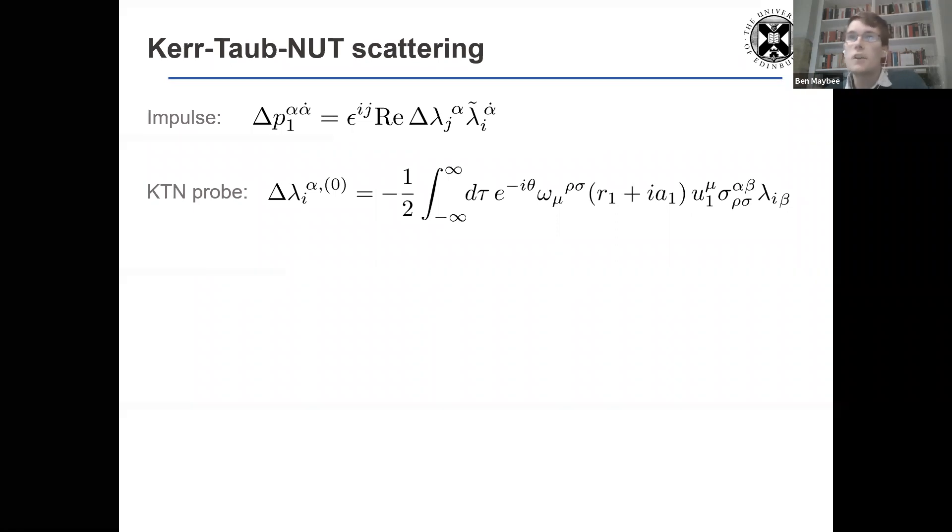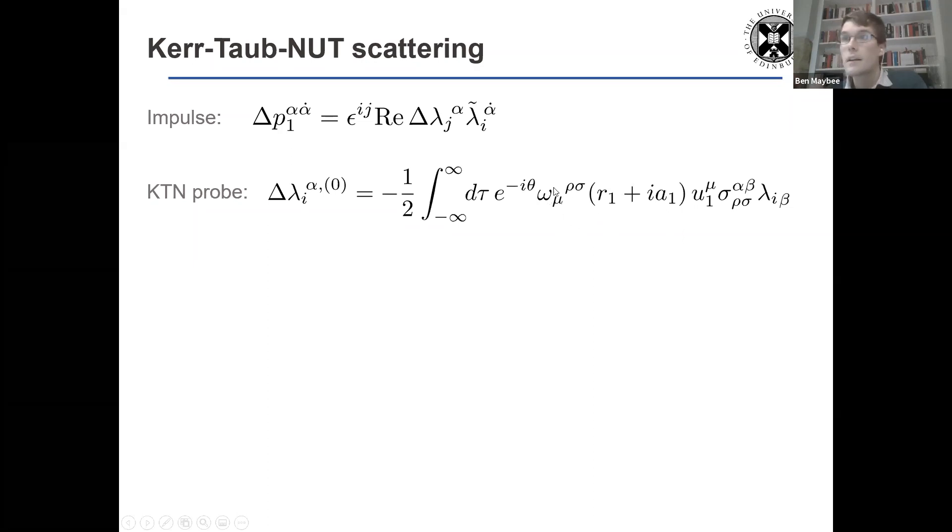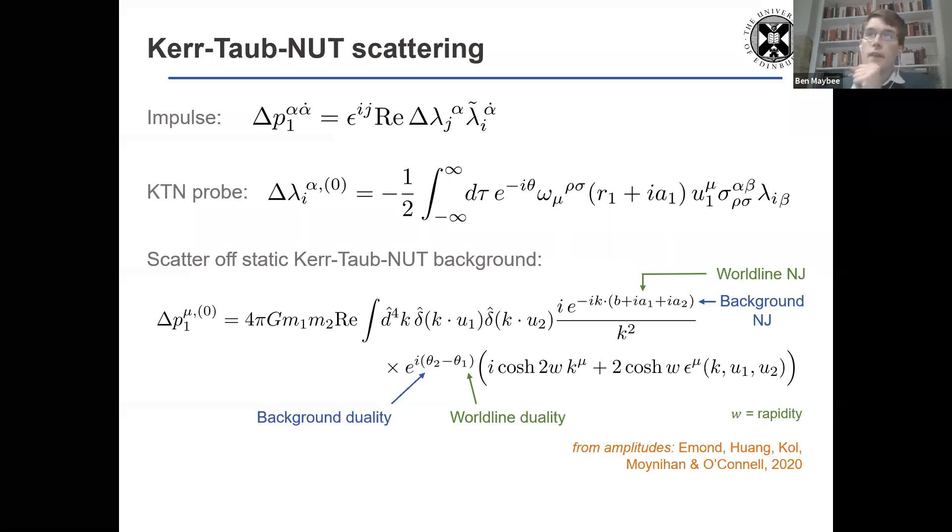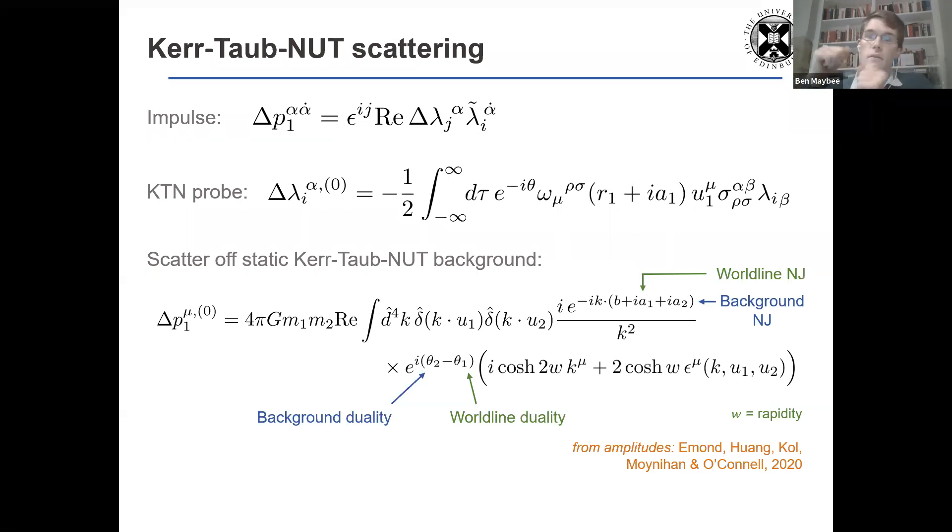Indices, you might have dropped frame indices and spinor indices. That's just because I'm working at leading order. So the difference between them is trivial. And when you go through the algebra, this is the result that comes out. So we have two Kerr-Taub-NUTs. So static Kerr-Taub-NUT background again, and then a probe Kerr-Taub-NUT scattering off.